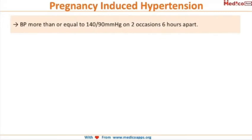Now, how do we define PIH? If the blood pressure is more than or equal to 140 by 90 mmHg on two occasions at least six hours apart, then we define it to be pregnancy induced hypertension.